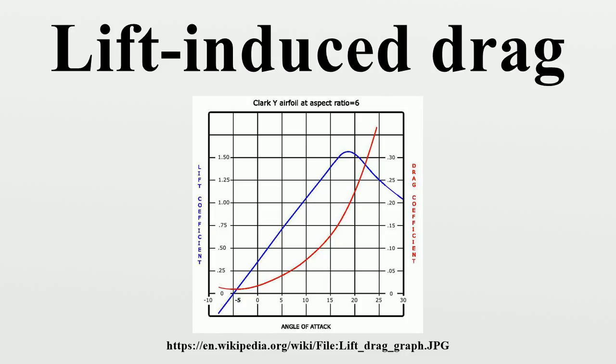The speed for greatest range is the speed at which a straight line from the origin is tangent to the fuel flow rate curve. The curve of range versus airspeed is normally very flat, and it is customary to operate at the speed for 99% best range, since this gives about 5% greater speed for only 1% less range.